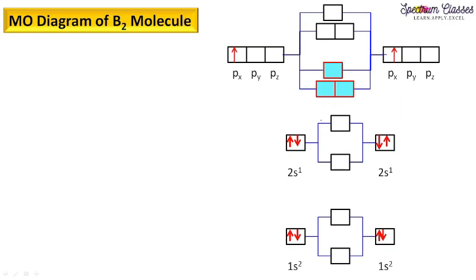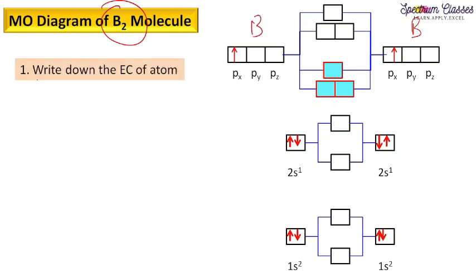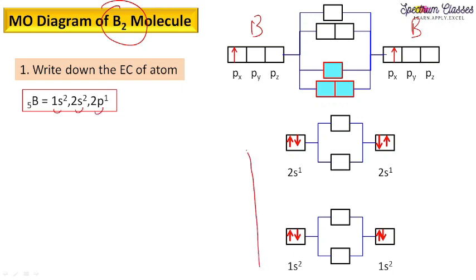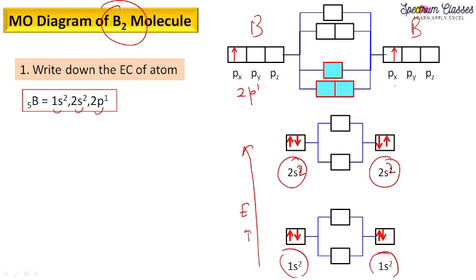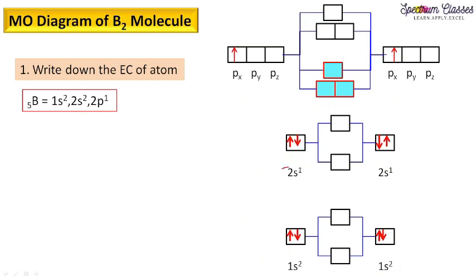Now I will take the example of the boron molecule. For one boron atom, the electronic configuration is 1s², 2s², 2p¹, so the atomic orbitals are written in increasing order of energy: 1s², 2s², 2p¹. Similarly for the second boron atom: 1s², 2s², 2p¹. This is how we write the atomic orbitals in increasing order of energy before constructing the MO diagram.